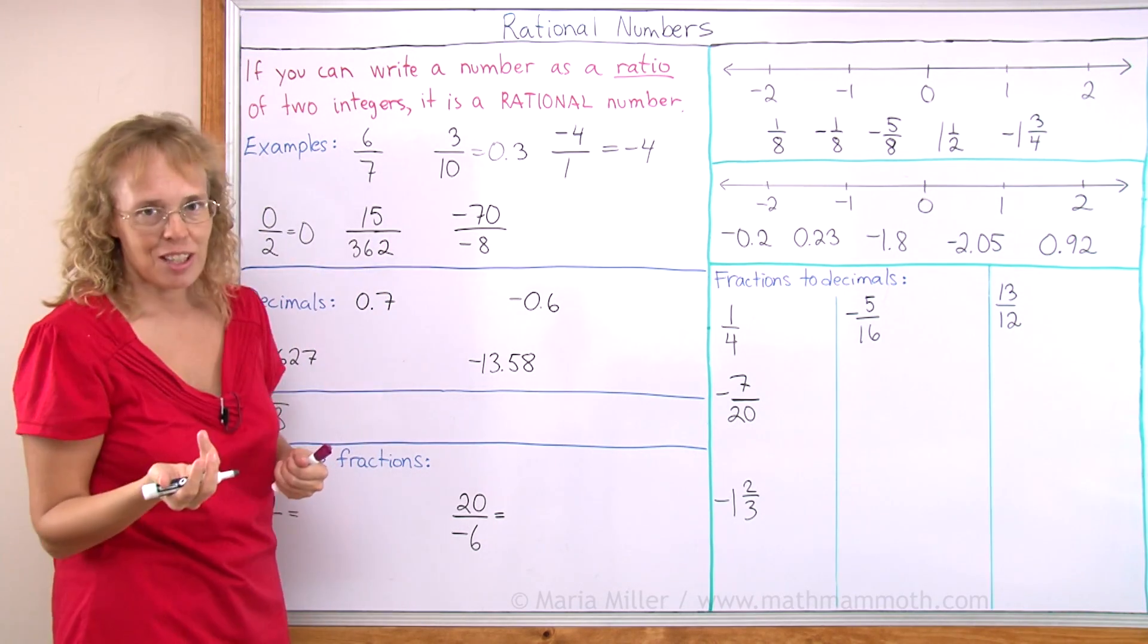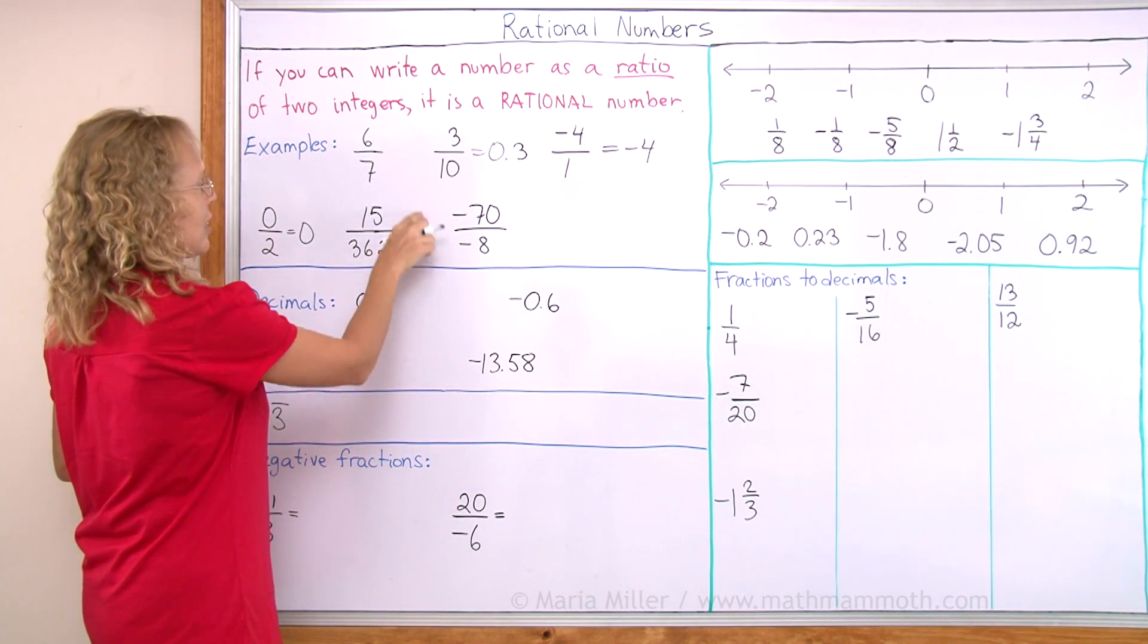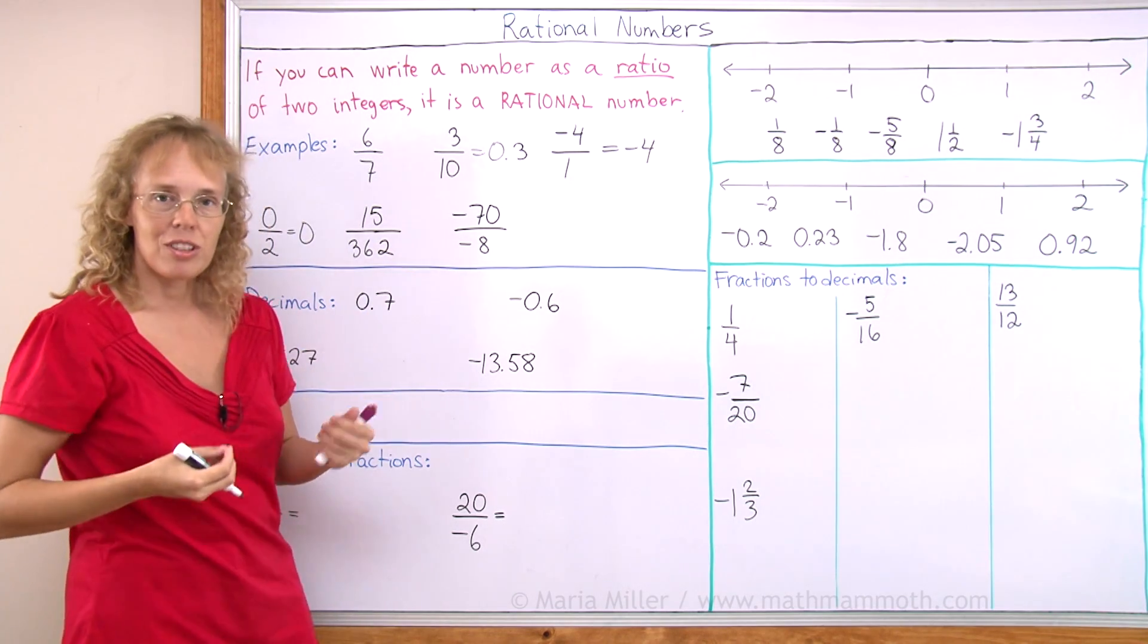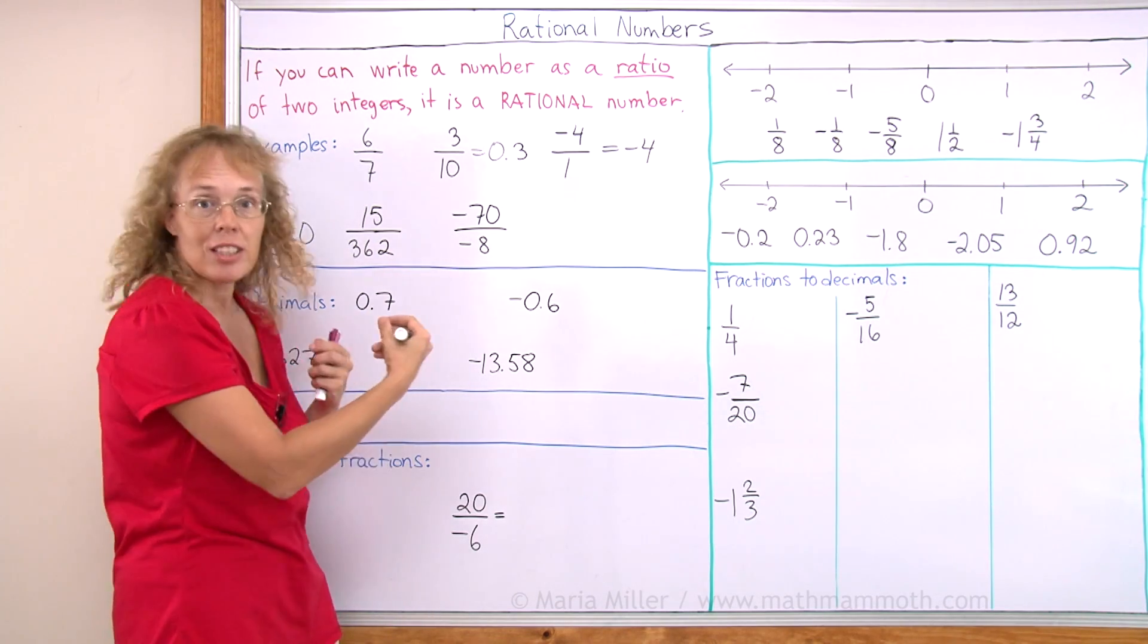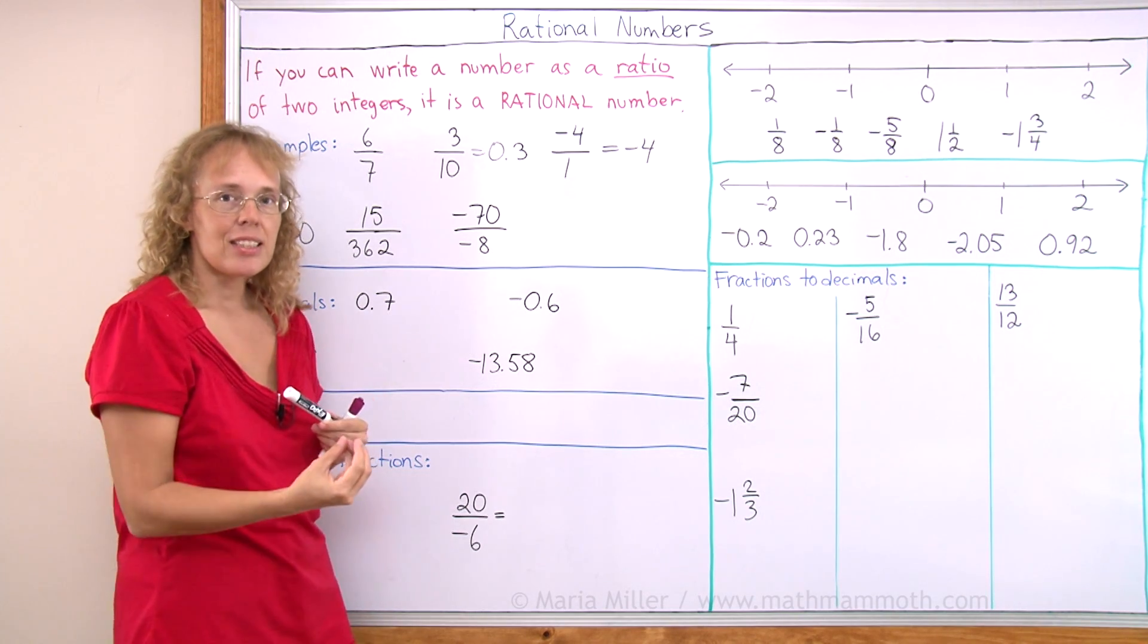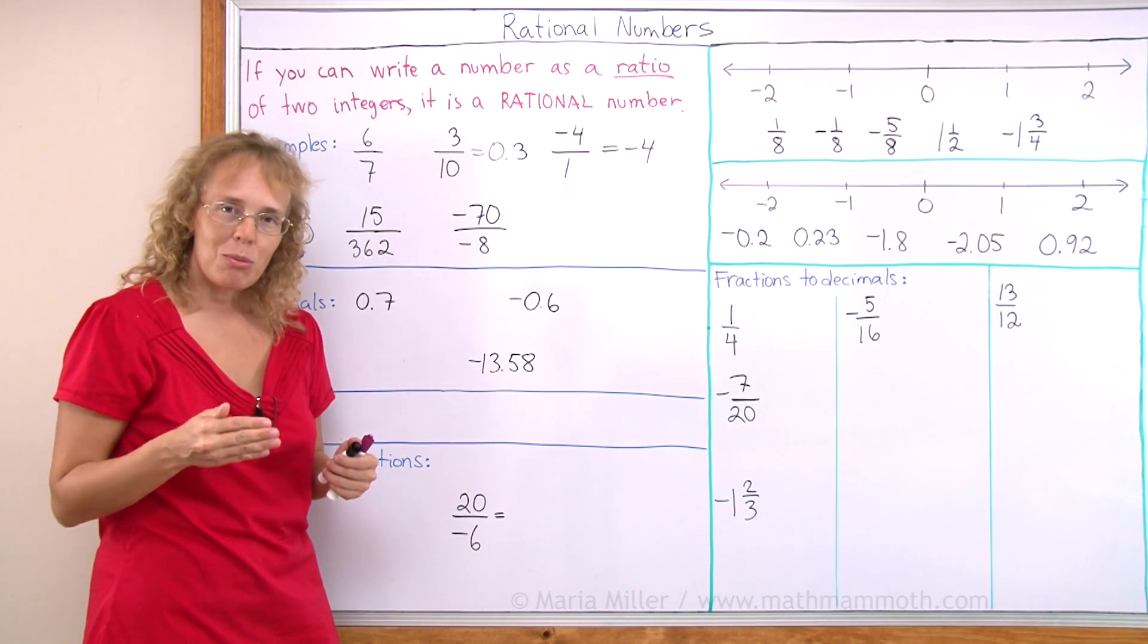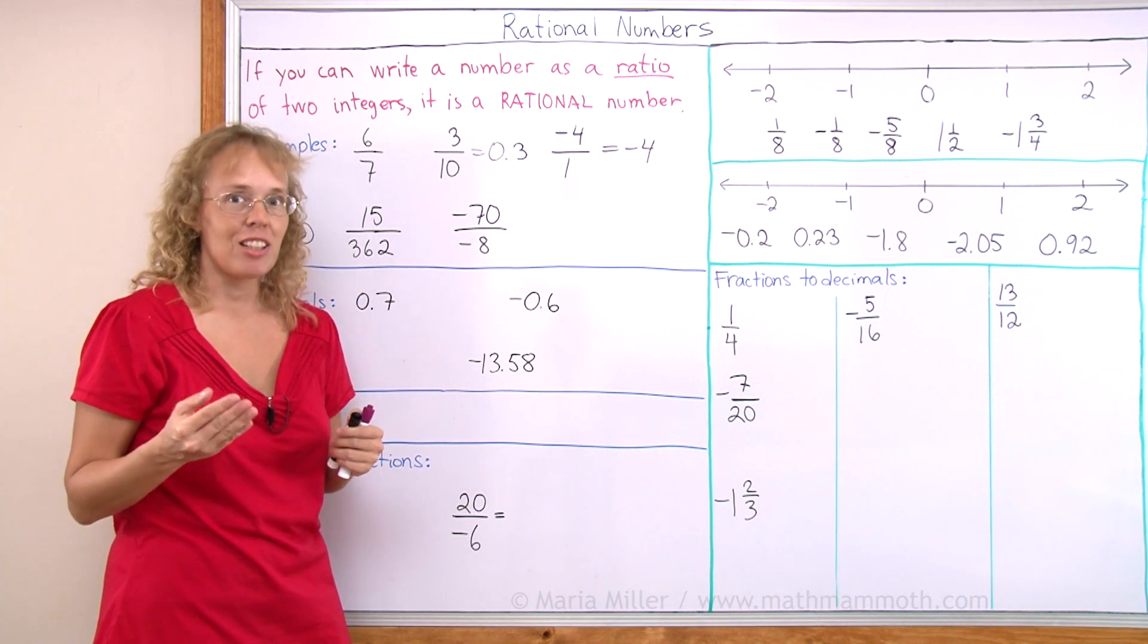All of your fractions are rational numbers, such as this fraction, or this. Now, this also, you can do the division, and you will get some kind of a decimal number. And so, that decimal number is a rational number. In fact, all decimal numbers you use in your normal life are rational numbers.